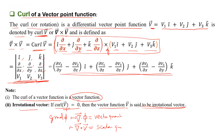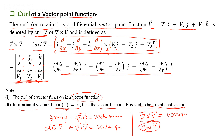To summarize: when the del operator acts on a scalar quantity via dot product, we get a vector — the gradient of phi. When the del operator acts via dot product on a vector quantity, we get a scalar — the divergence. When the del operator acts via cross product on a vector quantity, we get a vector — the curl of vector v. Remember these three points: gradient, divergence, and curl.